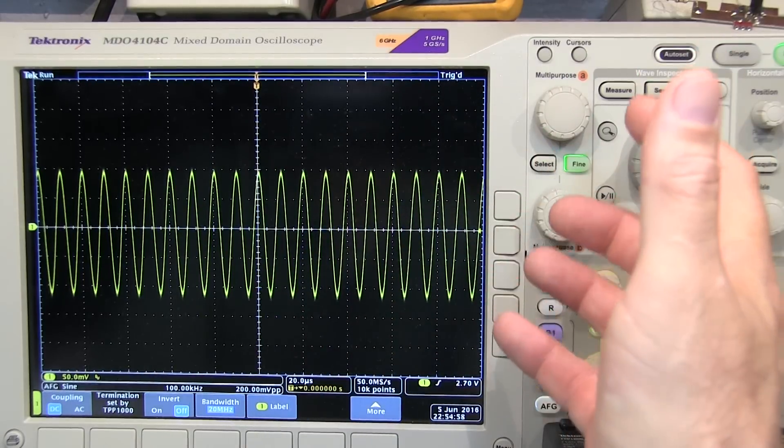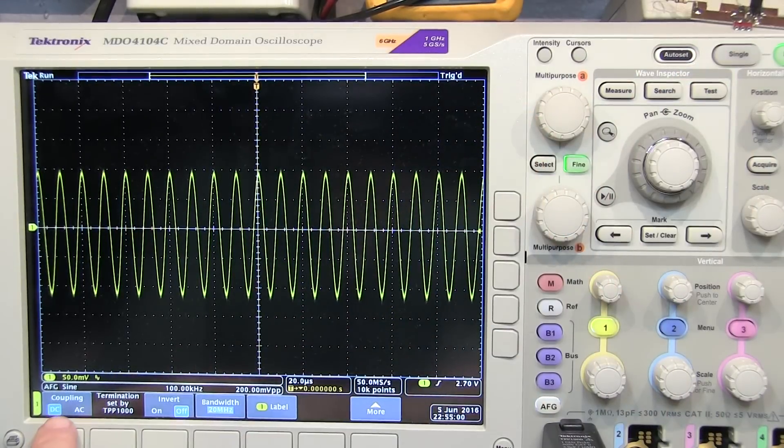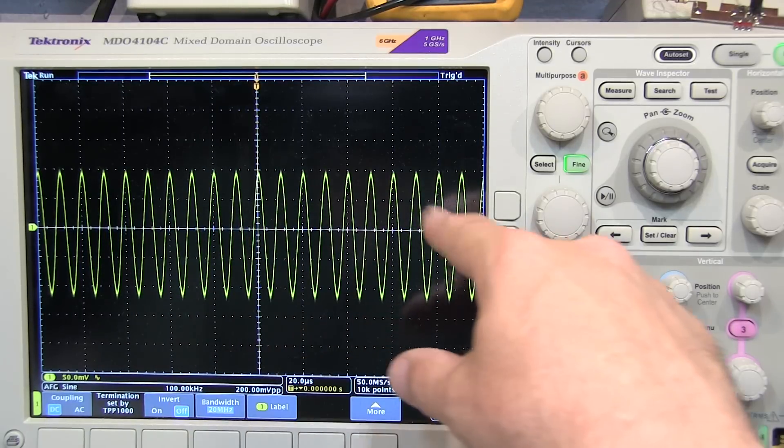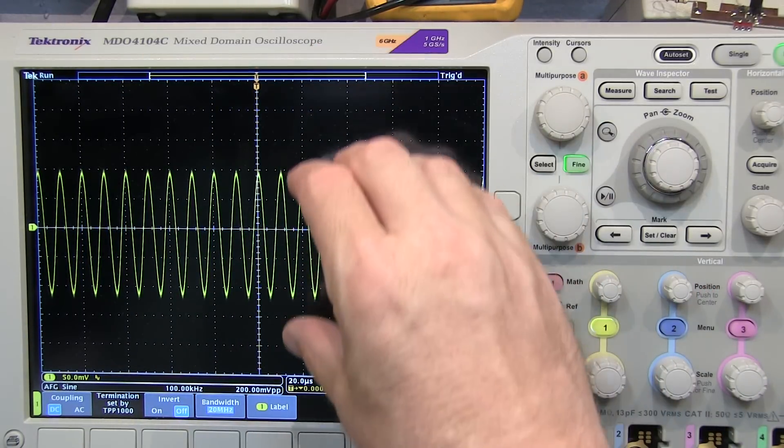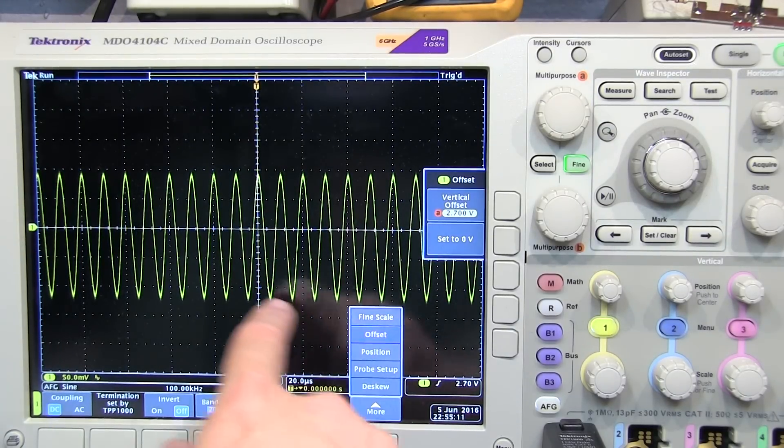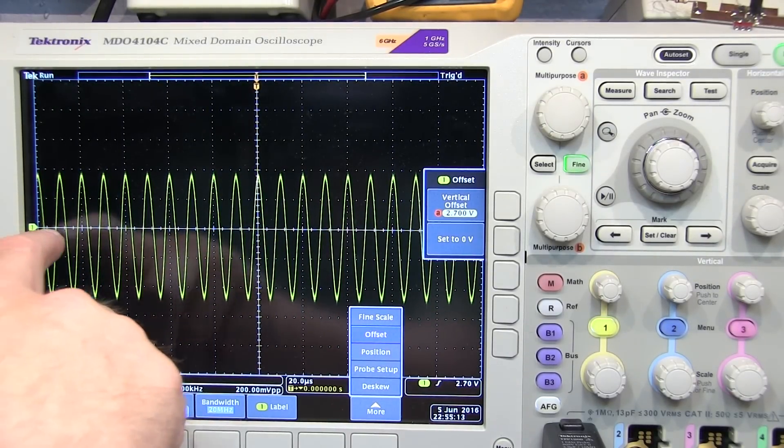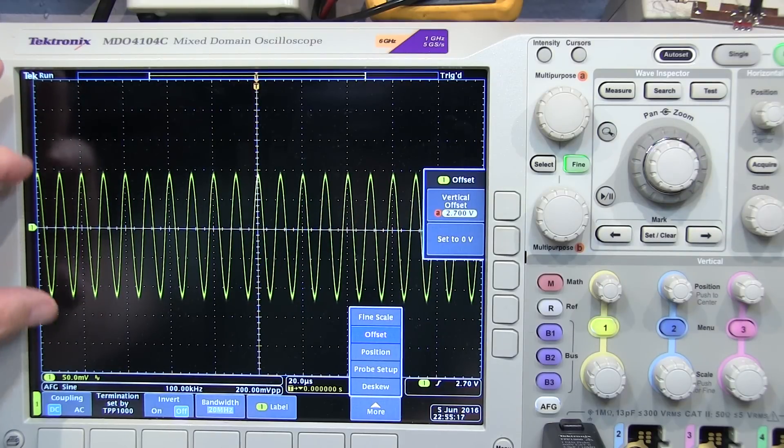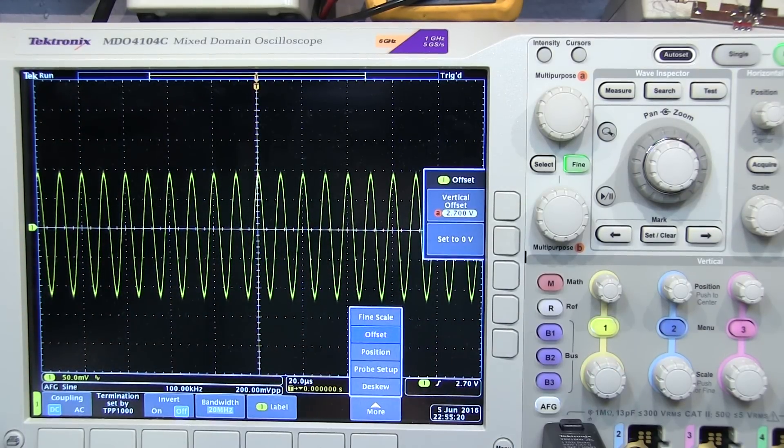So now that solves that problem that I had if I just simply reverted to using AC coupling. I can monitor both the varying or AC content of the waveform, as well as the DC level. And that quite simply is all that the offset is, is the ability to change the reference level, or essentially the zoom reference of the channel, for adjusting the channel scale.